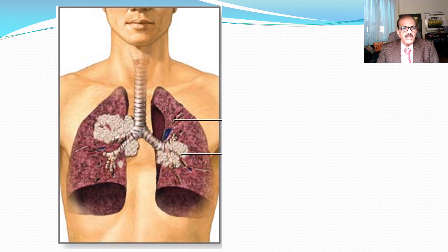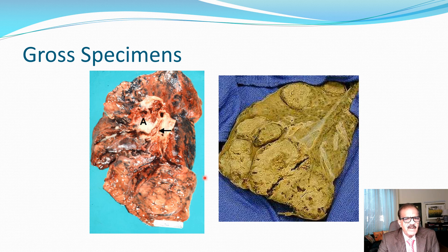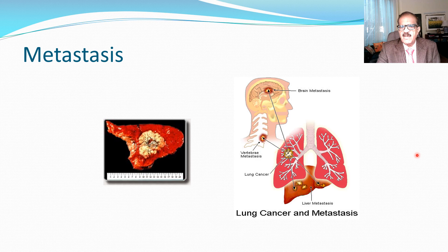Some pictures are shown: a tumor arising from the bronchus, artwork showing tumor location, a tumor going to the upper part of the lung, a cut section of actual specimen showing the bronchus and tumor, and multiple malignant deposits. Metastasis is shown in the liver, brain, and spine, along with the primary tumor. These pictures are to give a better concept of this malignancy.